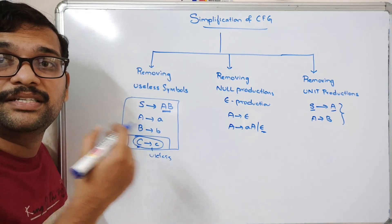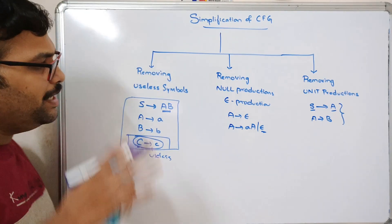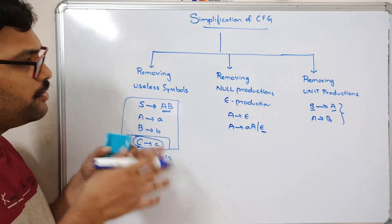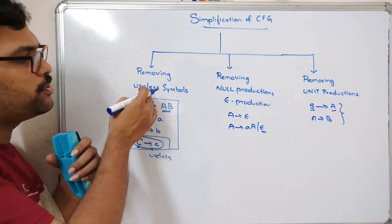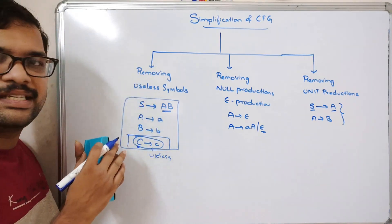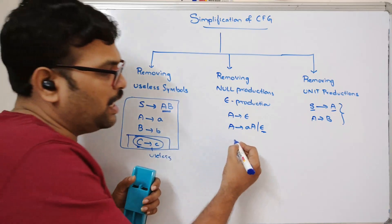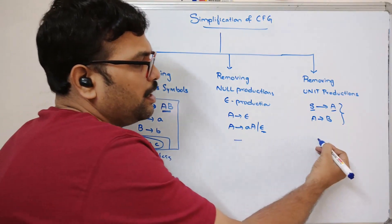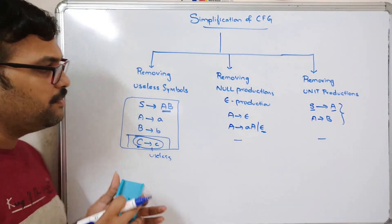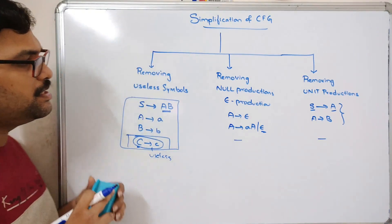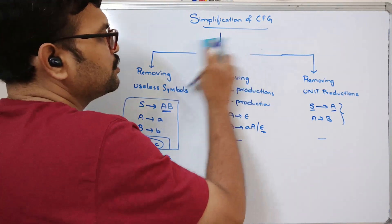By removing all these things we can simplify the CFG — that means we can minimize the context-free grammar. In today's session we will go through a few examples of removing useless symbols. In the next two sessions we will cover null productions and removing unit productions. Let us now look at the removal of useless symbols.